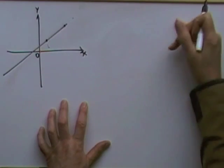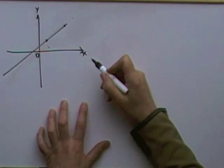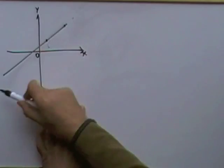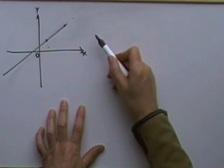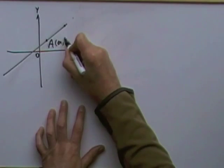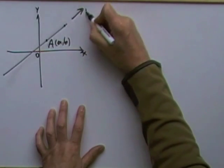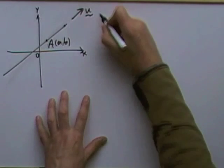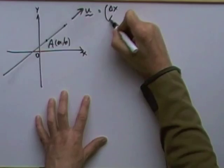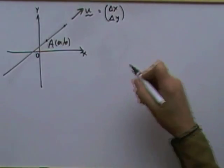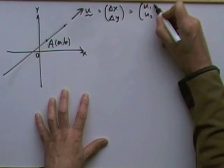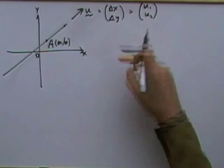The equation of a line in two dimensions has a variety of forms. Taking this from the vector standpoint, to fix a line you need two points, or one point and its direction. So I have one point (a, b) and the direction the line's facing, called u, where u has components u1 and u2 — interpreted as the difference in x and y between two points.